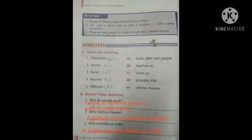Next exercise, answer these questions. First one, why do people work? Answer is people do different types of work to make a living.